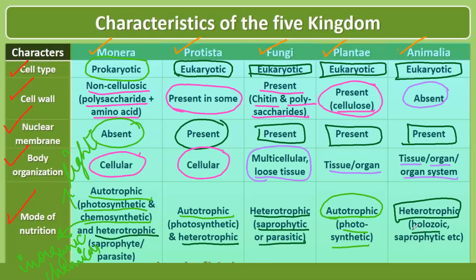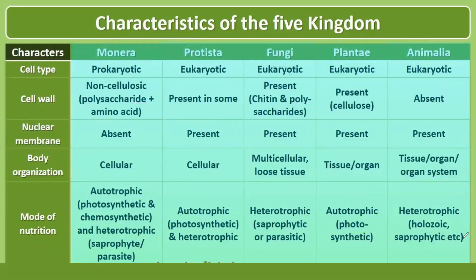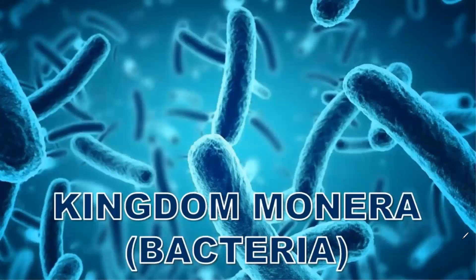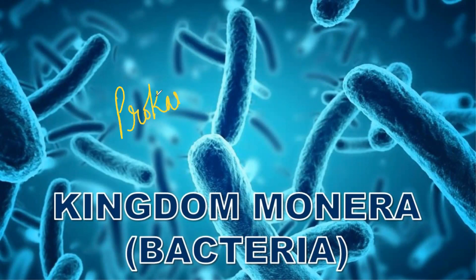Animalia are holozoic, saprophytic, etc. This covers the basic characteristics of the different kingdoms. Now we will start with Kingdom Monera, which includes bacteria. The basic characteristics of Kingdom Monera are: they are prokaryotic in nature, they show mixotrophic nutrition (autotrophic as well as heterotrophic), and they are unicellular.